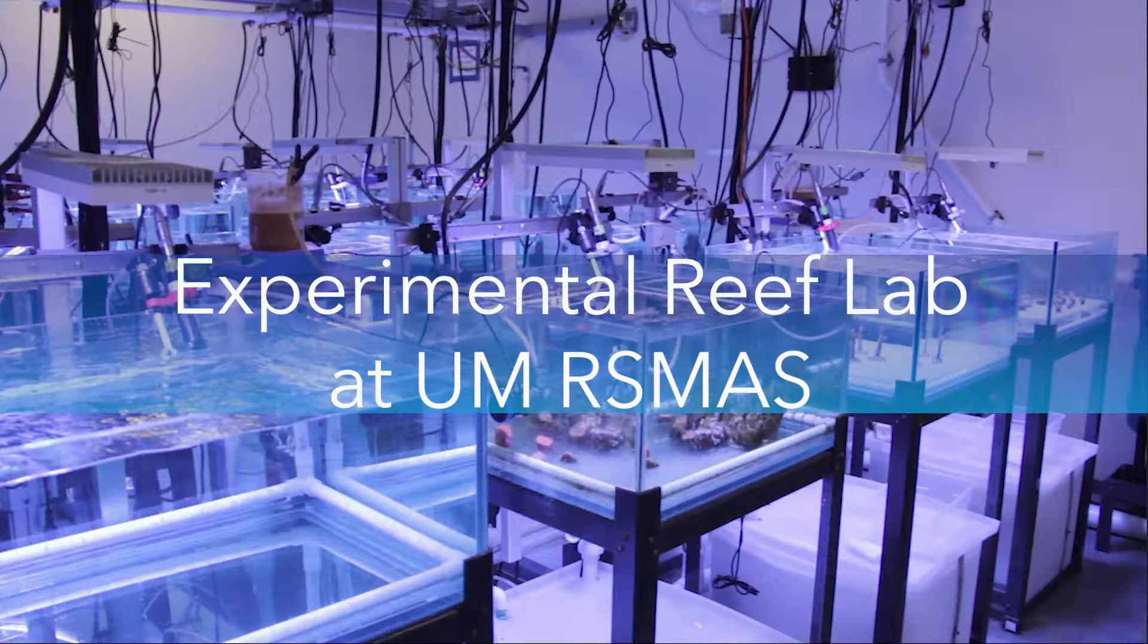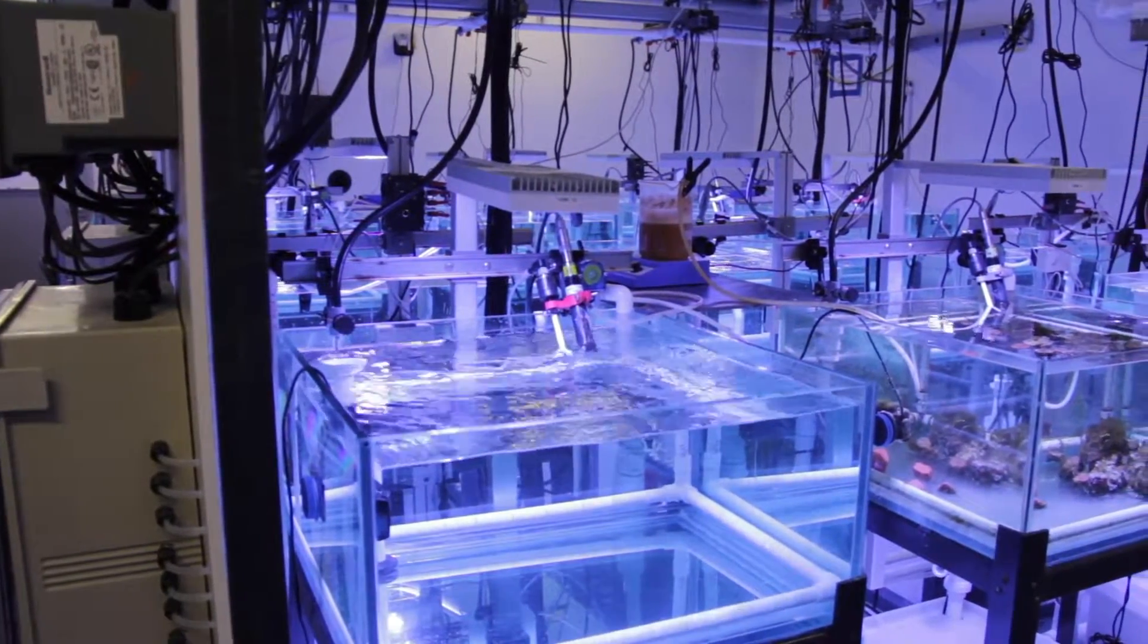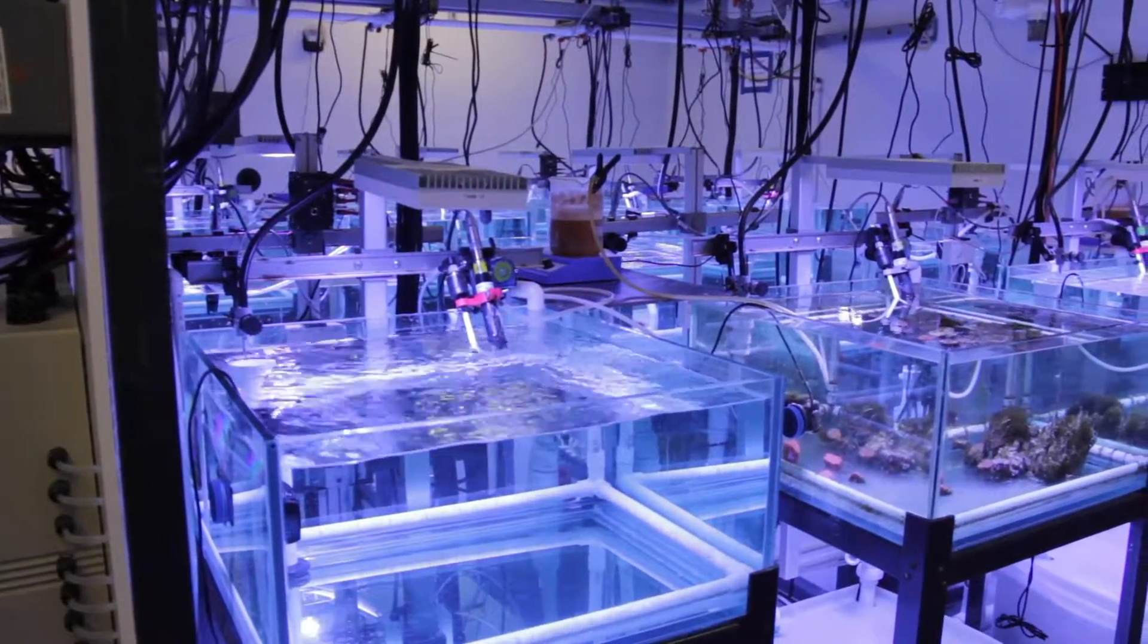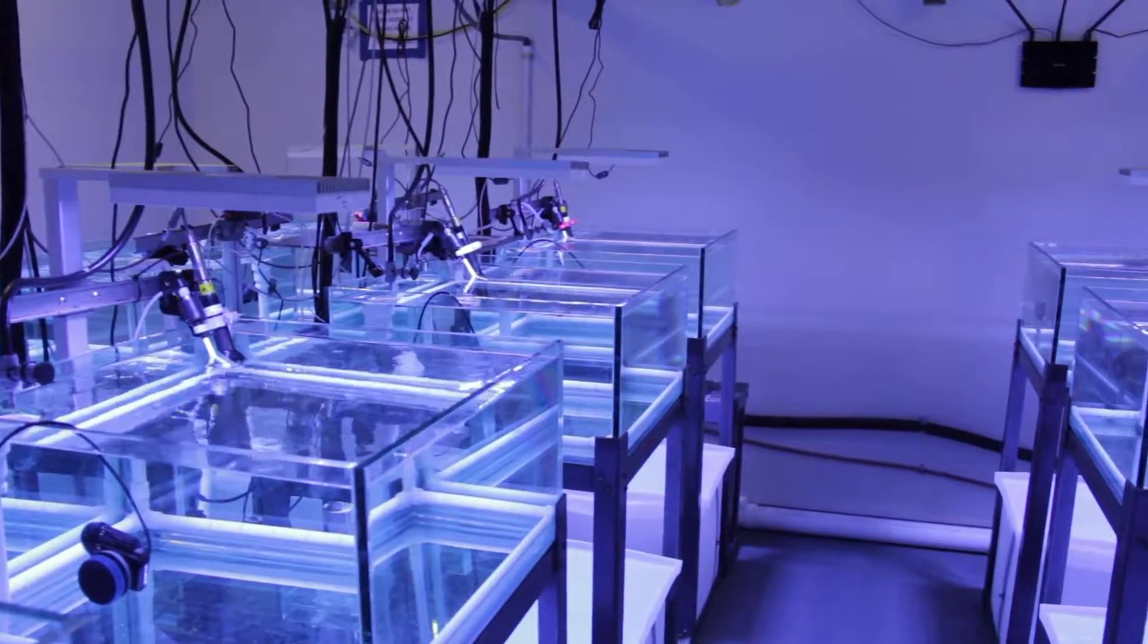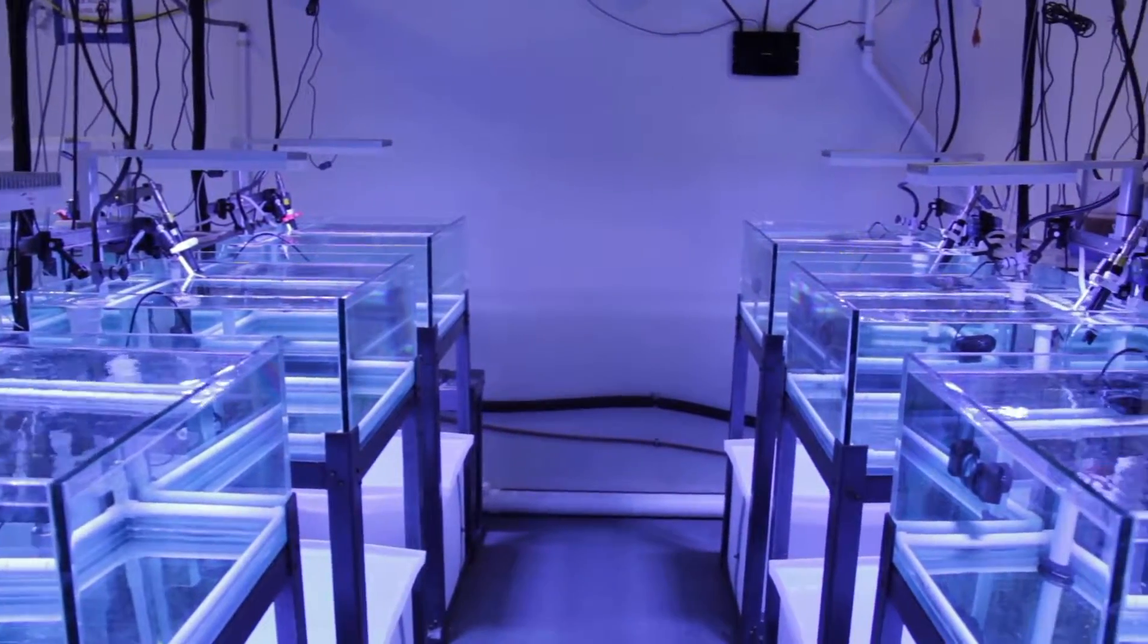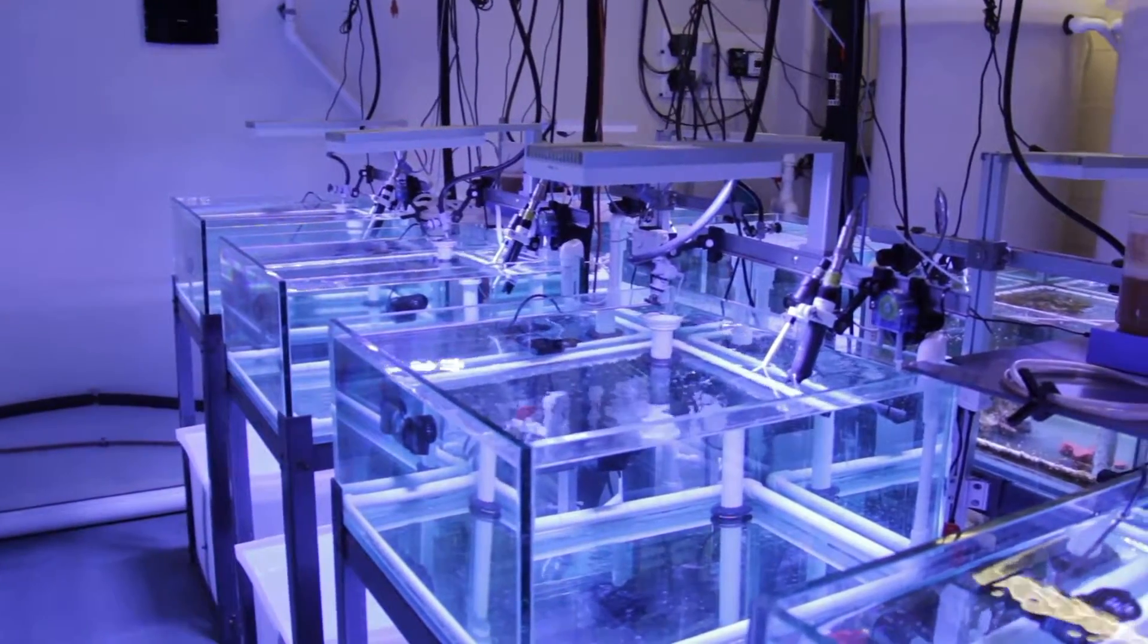The experimental reef lab at the University of Miami's Rosenstiel School was designed and built by AOML and CIMAS scientists to precisely manipulate conditions reef organisms will experience in the future. The lab has 16 completely separate aquarium systems, which each can be programmed to have different pH, temperature, and light to run specialized experiments.